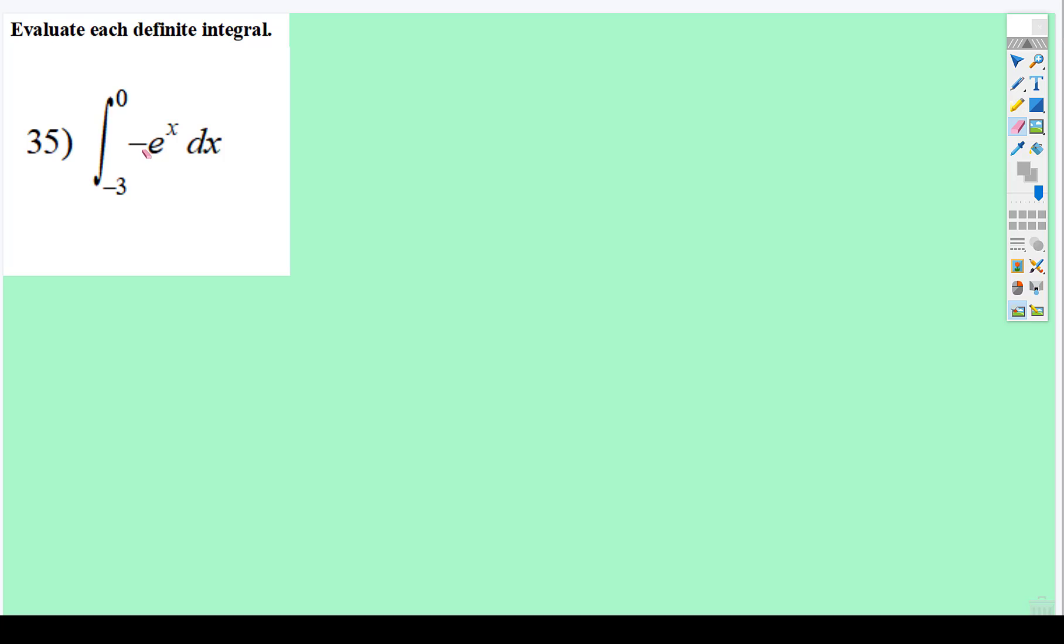This one's pretty straightforward, but I would definitely rewrite this as negative 1 times the integral from -3 to 0 of e^x dx, because then it makes it a lot more transparent what you're doing.